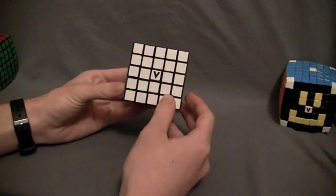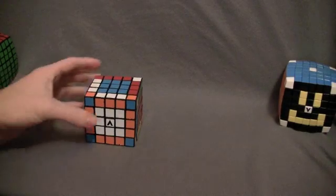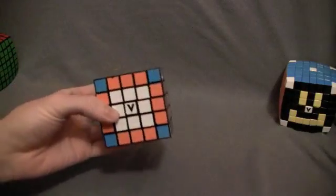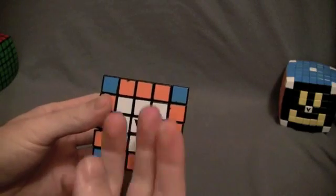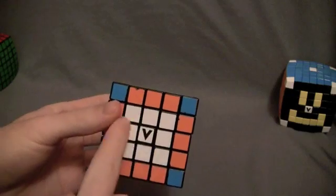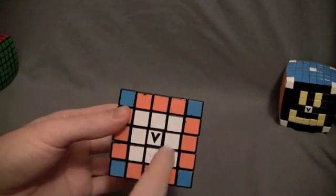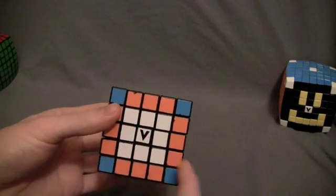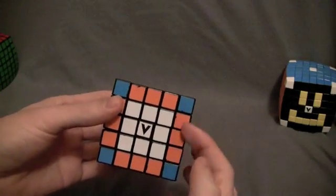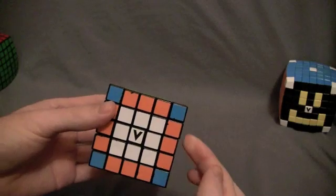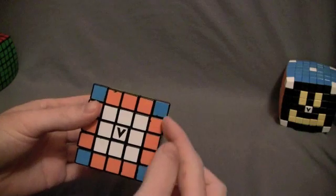First off, let's go over pieces. If you look at this, there's three main parts. The white stickers are called the centers. The orange stickers are called the edge pieces, or trudge pieces, because there's one, two, three edge pieces.